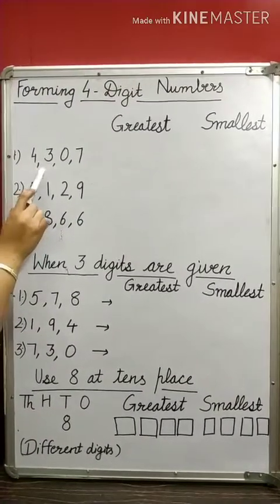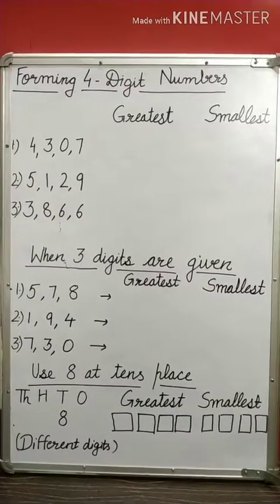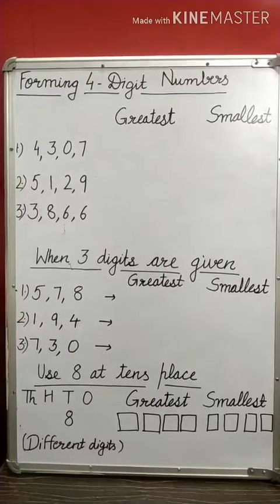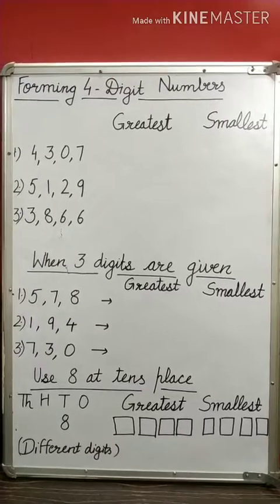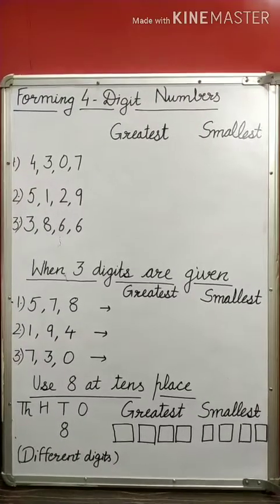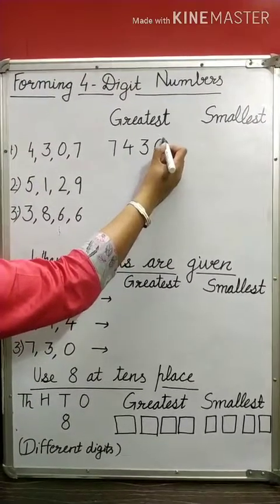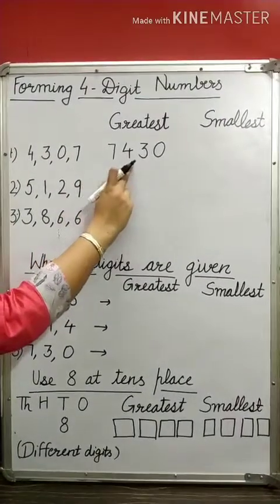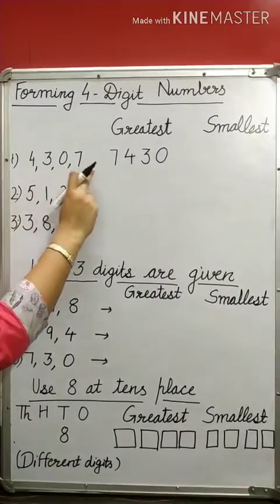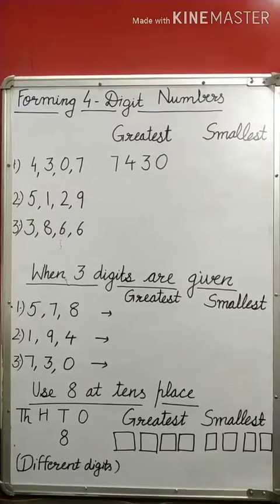Here I have written 4 digits: 4, 3, 0, and 7. If I am going to tell you to form the greatest number first, you need to arrange the digits in descending order. I have already told you how to arrange in ascending as well as descending order. So, 7 is the greatest — I will write 7, then 4, then 3, and then 0. This is the greatest 4-digit number using these 4 digits. I have arranged them in descending order to form the greatest 4-digit number.